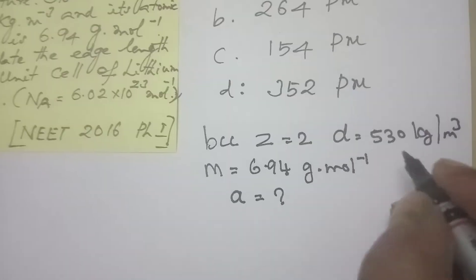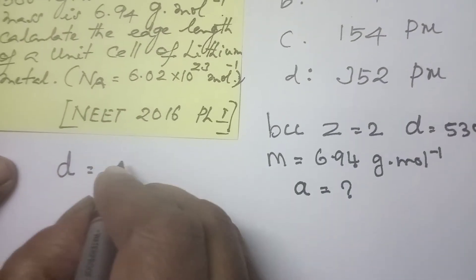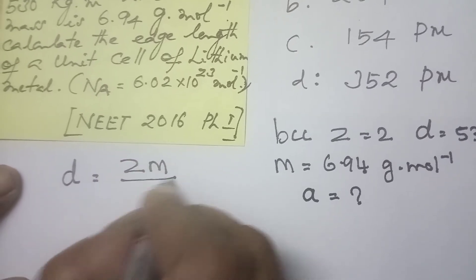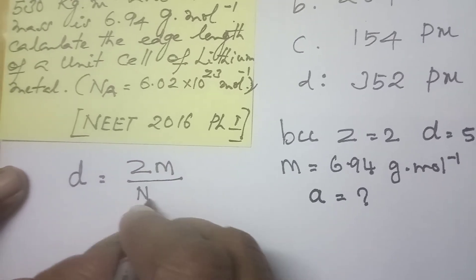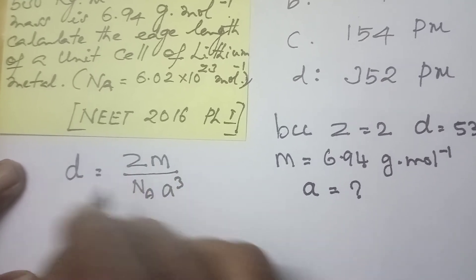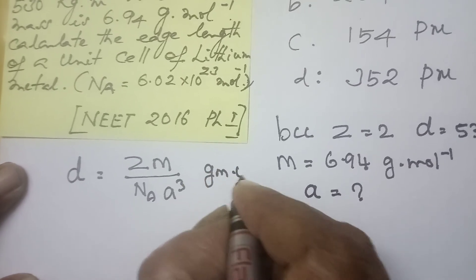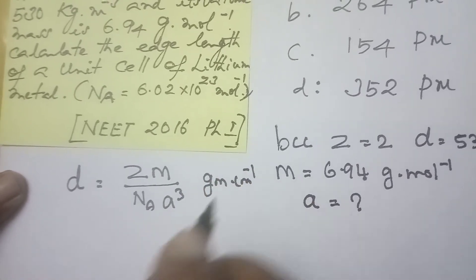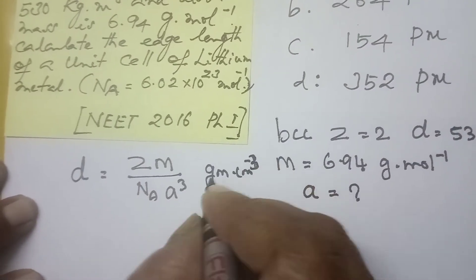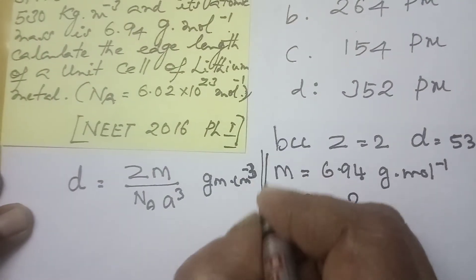Now our formula. It is very simple as usual. Density is equal to ZM divided by Nₐ·A³. Here ZM represents mass and A³ is the volume. The unit is gram per centimeter cube.